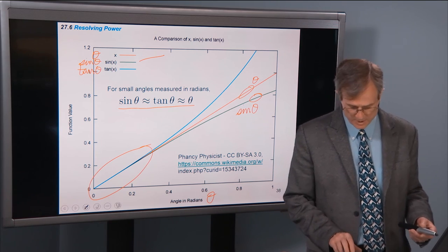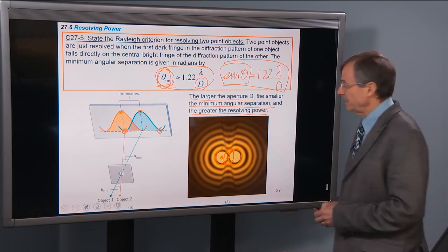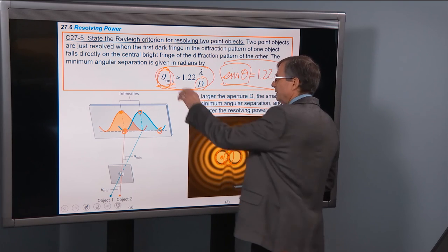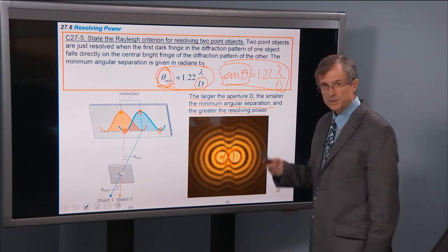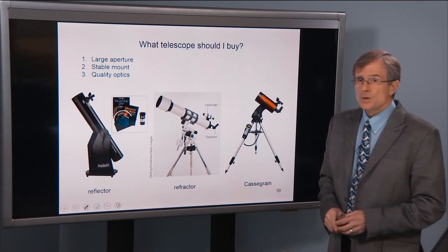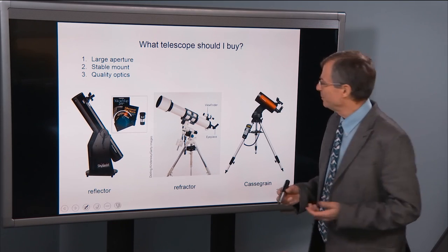And so that's why we can replace sine theta by theta in this equation. As long as the angles are small, then theta min equals sine of theta min.